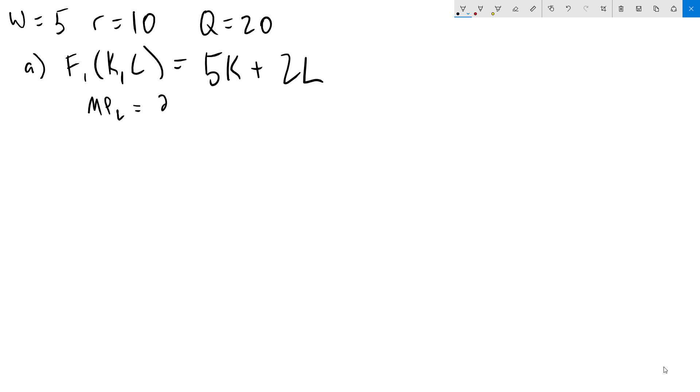The partial with respect to L is 2, and the marginal product of capital, the partial with respect to K, is 5. The unique feature of the linear production function is that the MPL and the MPK are constant numbers. They never change. It does not matter what L is, what K is, these are always constant numbers.